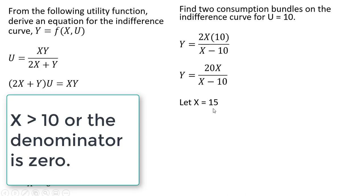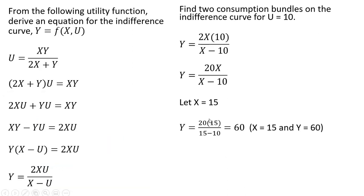And now let's just pick a value for X. So let's say X equals 15. Plugging 15 into the indifference curve equation. Here's one consumption bundle that will give the consumer 10 units of utility.